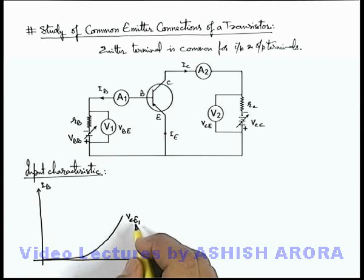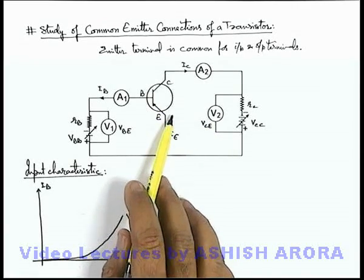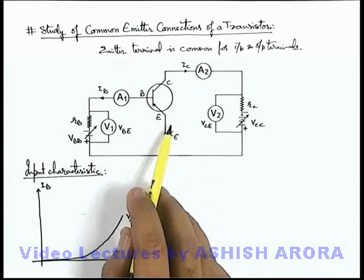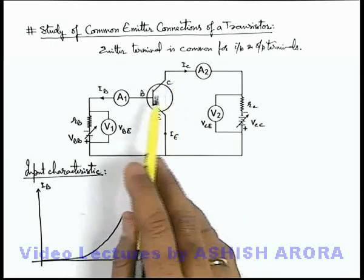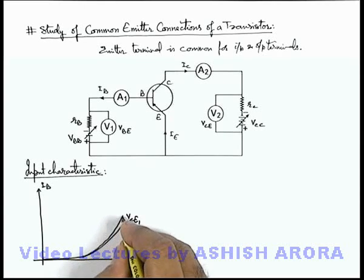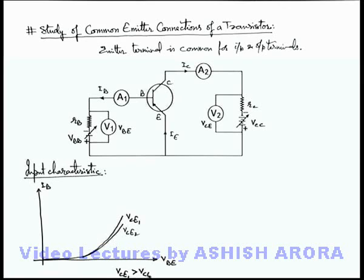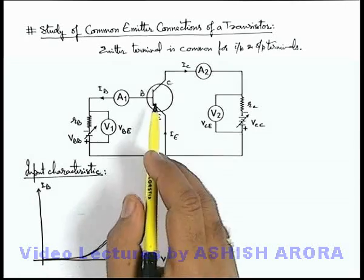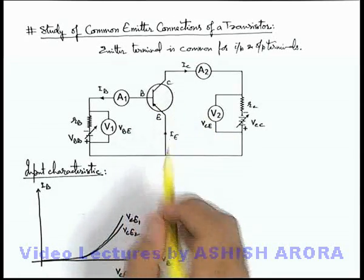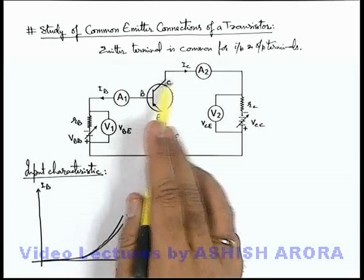Now, if we increase the collector-emitter voltage, more of the emitter current is pulled toward the collector side, and the base current will decrease. So if we increase the voltage, the curve will slightly drop, as there won't be much effect on the base current. Say this is VCE2, where VCE1 is greater than VCE2. On increasing the collector-emitter voltage to VCE2, the base current will slightly drop because more of the emitter current will pass through the collector side.